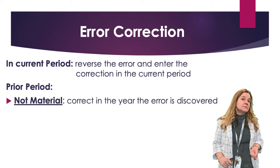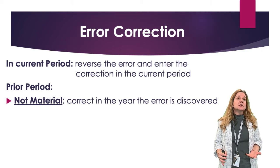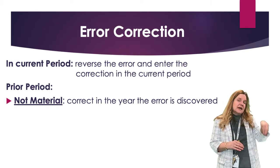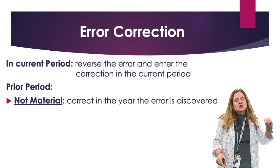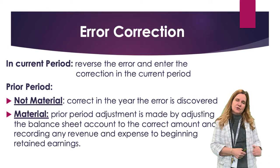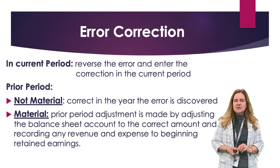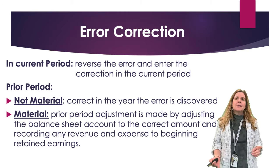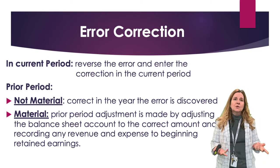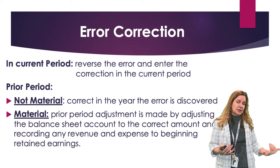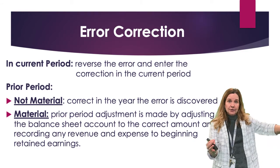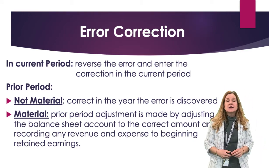If it's not material — if we don't think it's going to affect the user's decisions — then we just correct it in the year it's discovered. If it's material, and we are concerned that it's going to make users make a different decision, then we have to do a prior period adjustment. We do that by correcting the balance sheet accounts to make them the correct amount, and then recording the revenue and expense to beginning retained earnings, because revenue minus expense is net income, which flows to retained earnings. So it gets adjusted as a prior period adjustment.